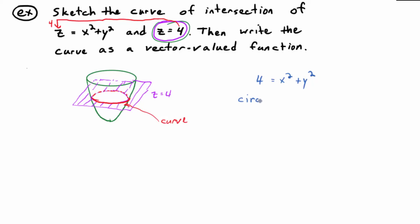It's a circle. What's the radius? Two. Now, that's the rectangular equation. We still have to get the vector-valued function.